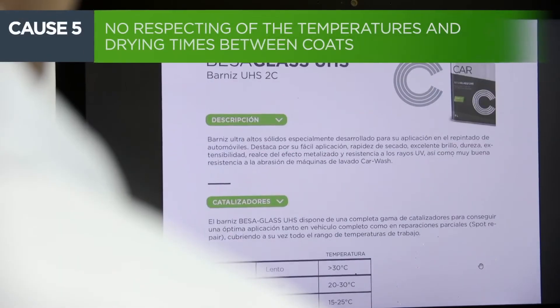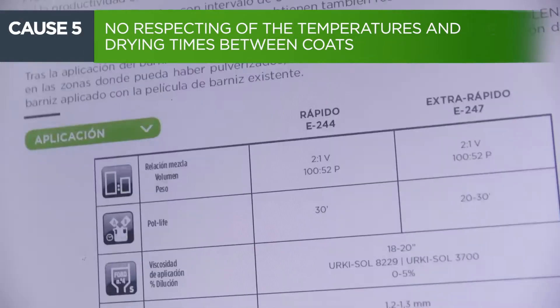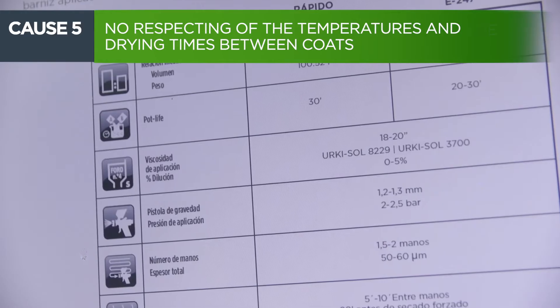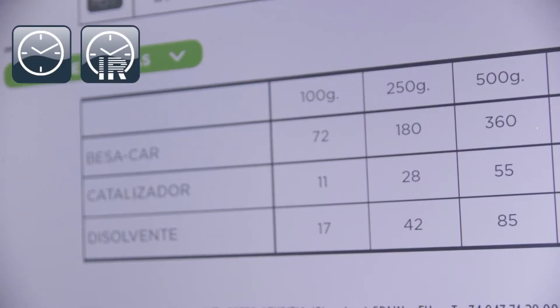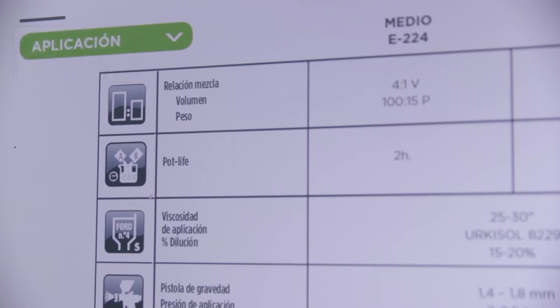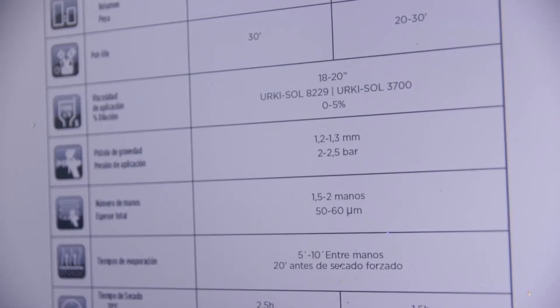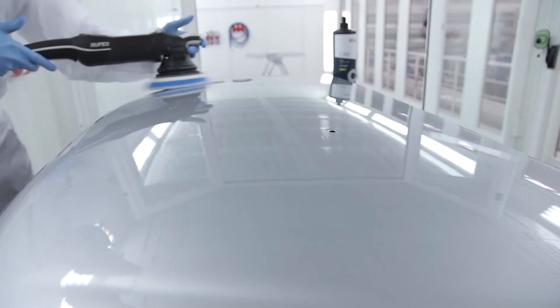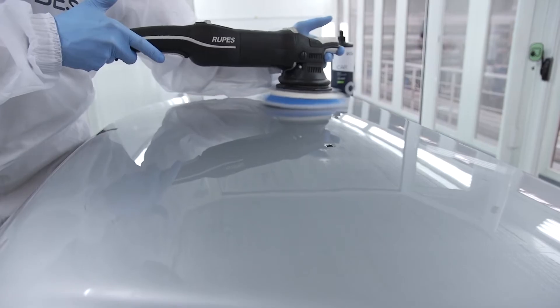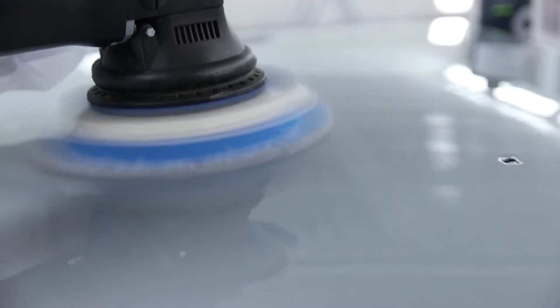Failure to observe the drying times and temperatures specified in the technical data sheet is a practice that can lead to a gloss loss in the top coat. In addition, we should not perform any polishing or shining of the surface until the paint is completely dry.